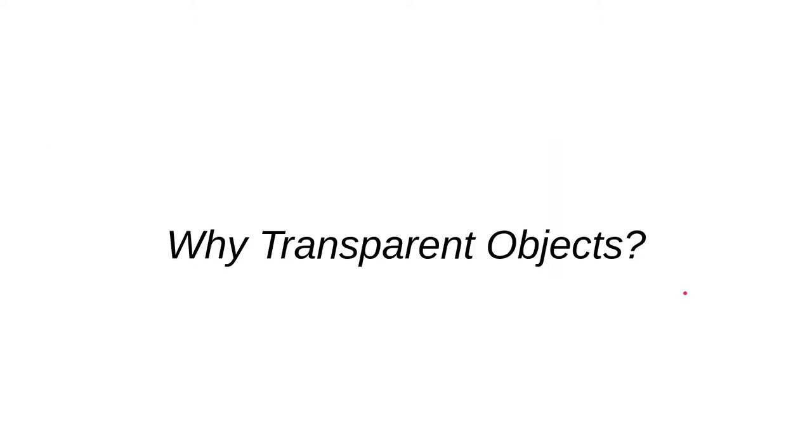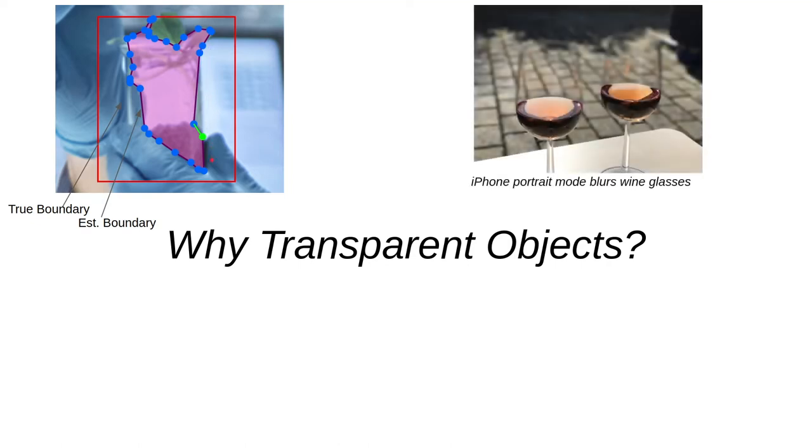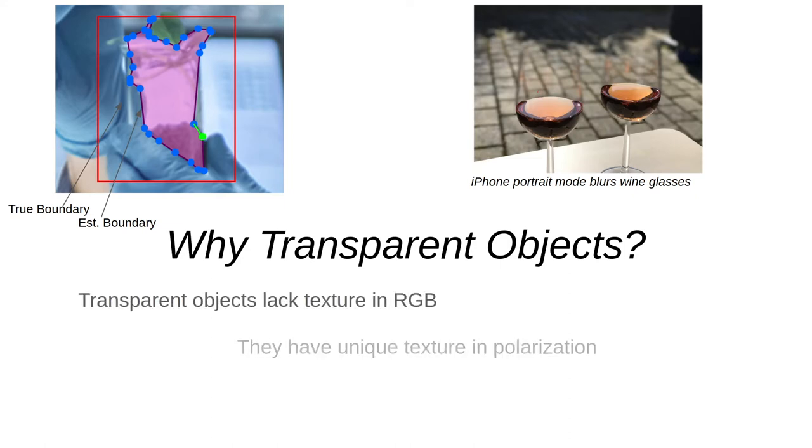But let's go back and talk about transparent objects for a second. See transparent object segmentation is hard because you have this extra problem of the background texture. The background texture like the glove in this case creates confusing edges and causes algorithms to really struggle when segmenting objects. Another example of this is the background texture here tricks the iPhone portrait mode into doing a portrait of the wine instead of the wine glass. Basically transparent objects lack texture in RGB and they have a unique texture in polarization.